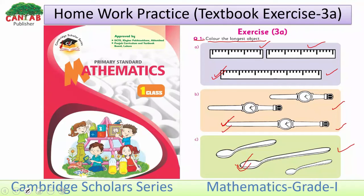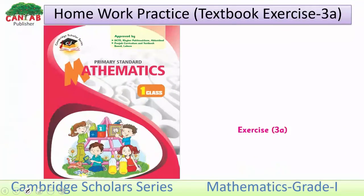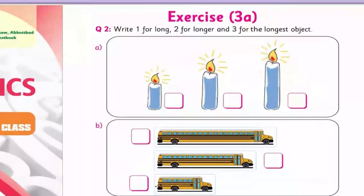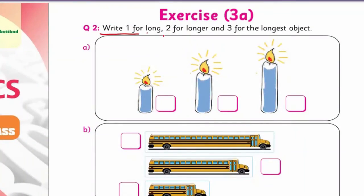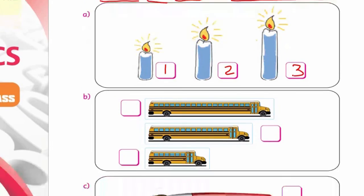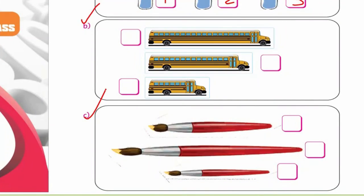Students, now come to the next page and complete this work, then send your book to the teacher for checking. In Question 2, write 1 for the long object, 2 for the longer object, and 3 for the longest object. Which is long — this one, 1. Which is longer — 2. Which is longest — 3. Similarly, complete Part B and C.